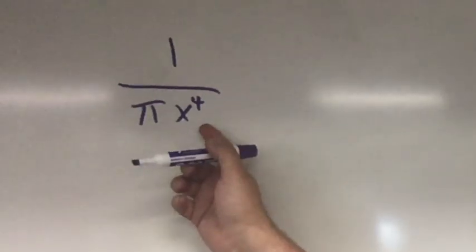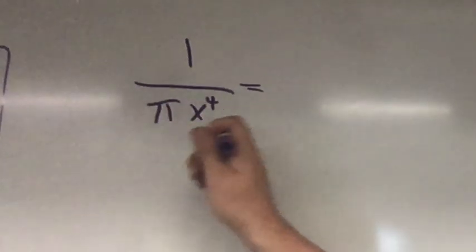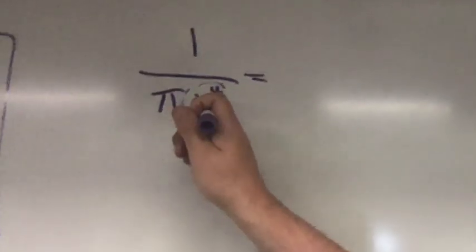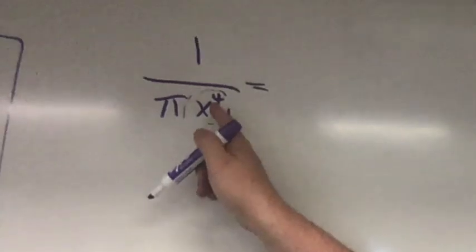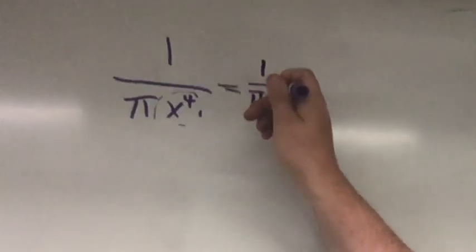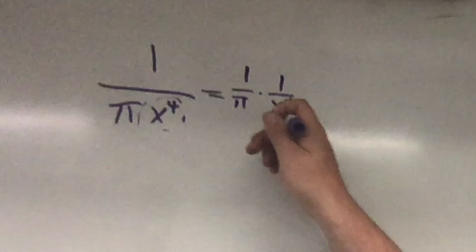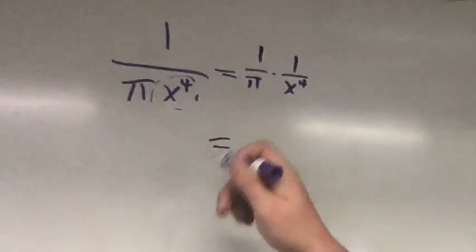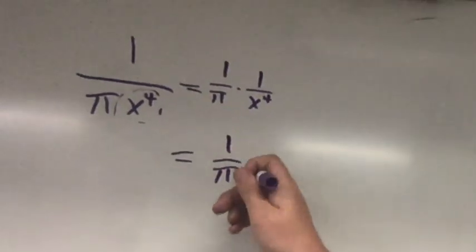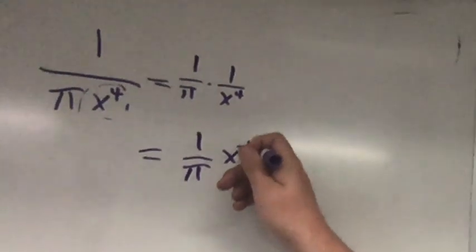You might want to rewrite this with a negative exponent so you could use power rule—I'm sorry, not product rule, power rule. Only the x is being raised to the fourth. So the 1 over π doesn't care about this x. The 1 over π remains where it is, and I can rewrite this with properties of fractional multiplication. Then I would have 1 over π times x to the negative 4.